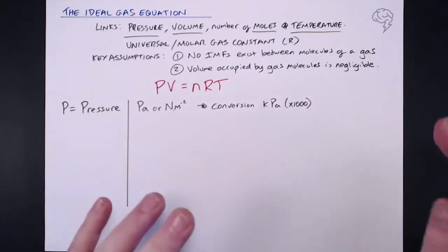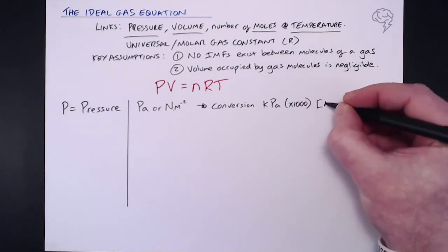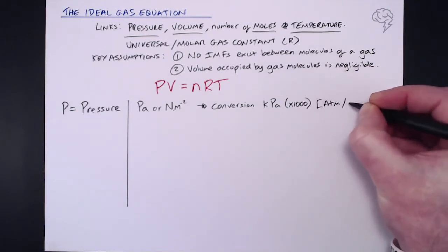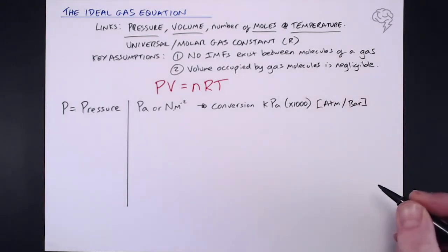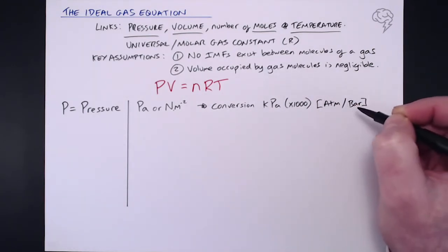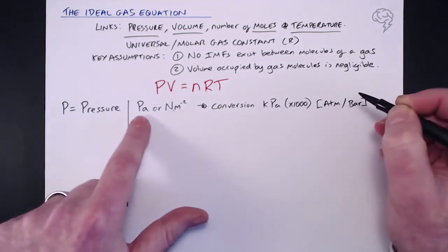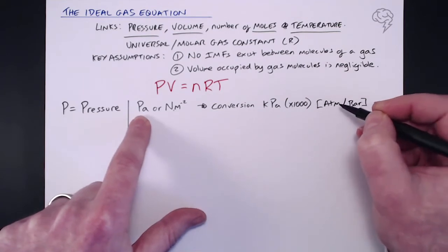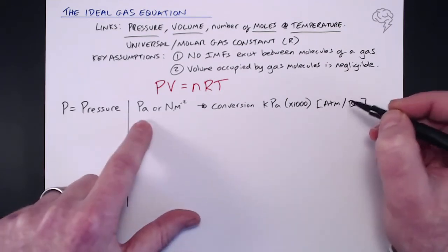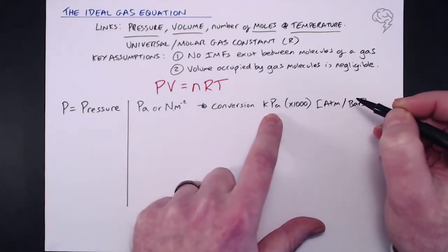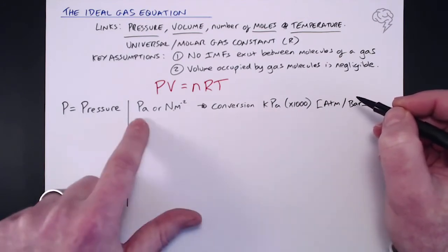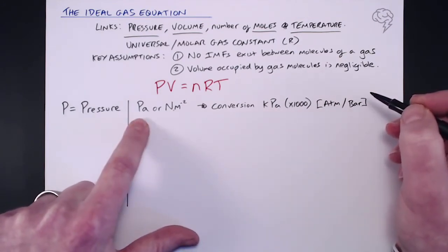Now, just as a little aside, just in case you may be given pressure in atmospheres or bar. Now, these are less common. But if you are given those, guaranteed you will be given the means to be able to convert these into pascals. So if you do need to convert these, you will be given the information. If it's kilopascals, you're expected to be able to do this. Multiply by a thousand to turn it into pascals.